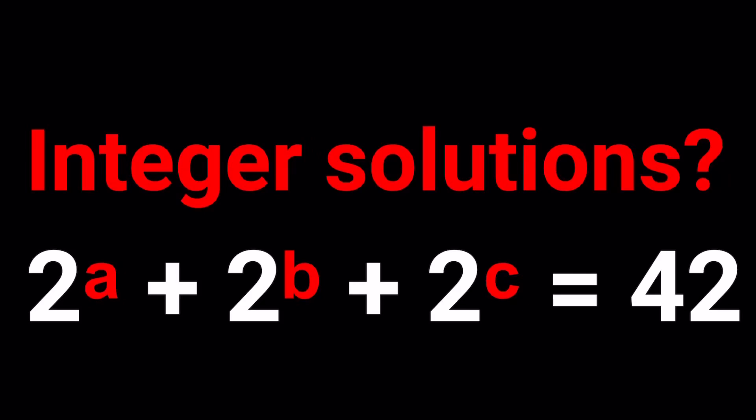Hello, everyone. In this video, we're going to be solving a Diophantine equation. We have 2^a + 2^b + 2^c = 42.